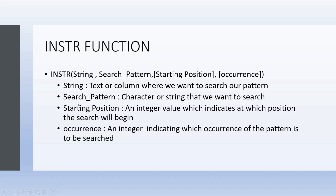In INSTR, the first parameter is the string in which the pattern will be searched — it can be hardcoded text or a column in a table. The second parameter is the pattern that is to be searched. The third parameter is an integer indicating where the search will begin. And since the pattern can occur multiple times, the fourth parameter indicates which occurrence we want to search. The third and fourth parameters are optional and if not specified, they default to the value 1. Don't worry if this sounds confusing — by the time we end this tutorial, you will be an expert in INSTR and SUBSTRING both.